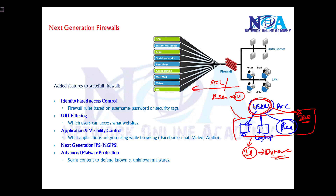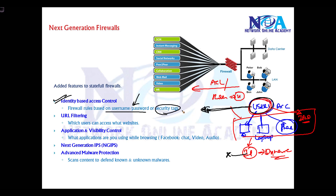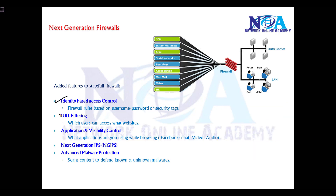That makes things complicated. Instead of writing rules based on specific IP addresses, we can write rules based on the user, so whatever device they use or wherever they access from, that particular user gets their own specific rules and traffic is allowed or denied accordingly. We call this identity-based access control, where we filter or define rules based on username, passwords, or security tags at layer two.